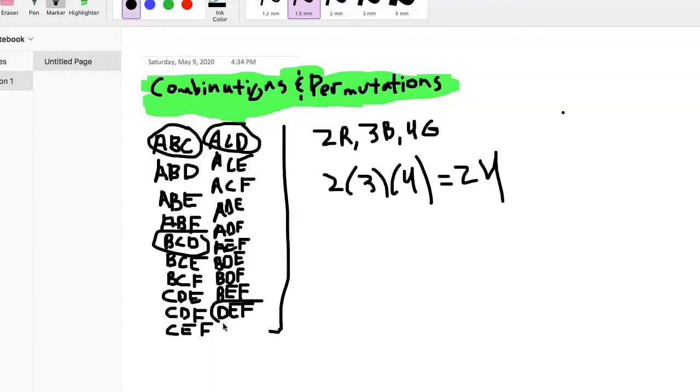Then there will also be a DEF combination. That'll be the only combination that you can have just with D that doesn't include either C, B, or A. E and F don't have any combinations by themselves because we need three people.